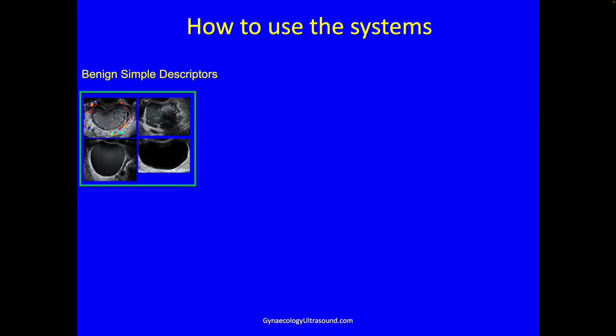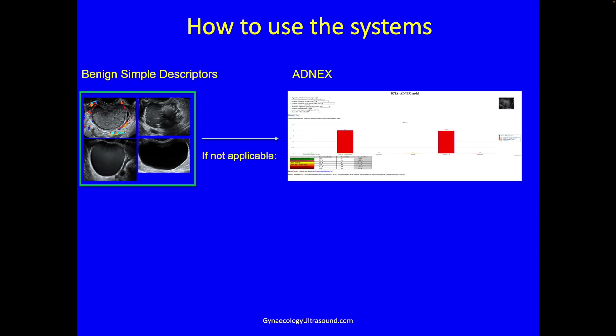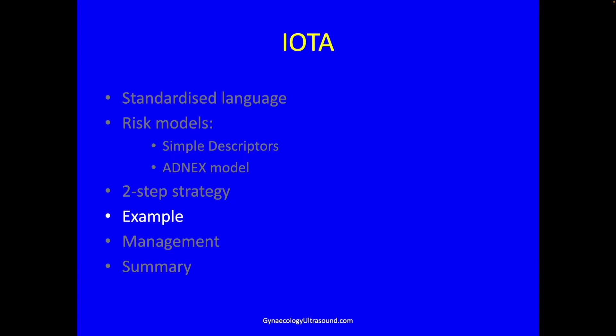How to use the systems: you do the scan, look at the mass, see whether it fits any of the four benign simple descriptors. If it doesn't, go for ADNEX and work out the risk of it being malignant.